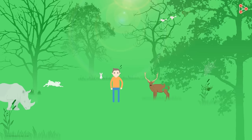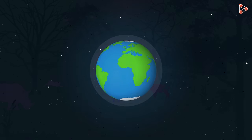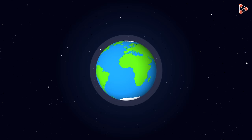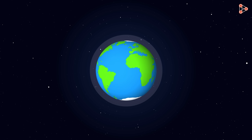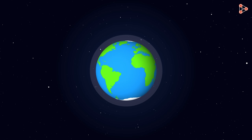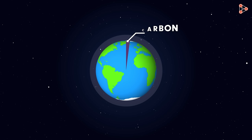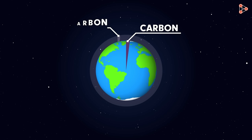But did you know that carbon is actually present in very small quantities in the earth's crust and also in the atmosphere? That's the irony. In spite of being present in almost every compound around us, carbon accounts for almost less than 1% in the earth's crust and in the atmosphere.